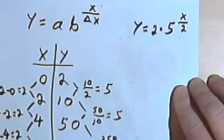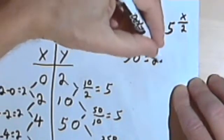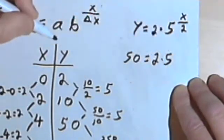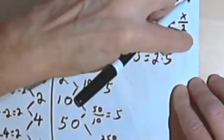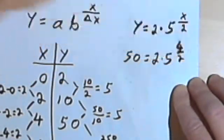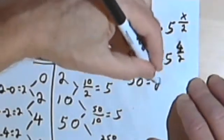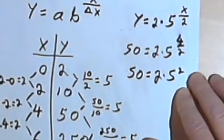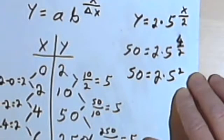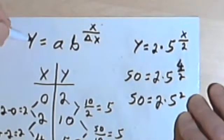And quickly, I'll do one more. I'm running out of time. When y is 50, I should have 2 times 5. x is 4, raised to the 4th power over 2. 4 over 2 is 2. So 50 equals 2 times 5 squared. 5 squared is 25. 2 times 25 is 50.